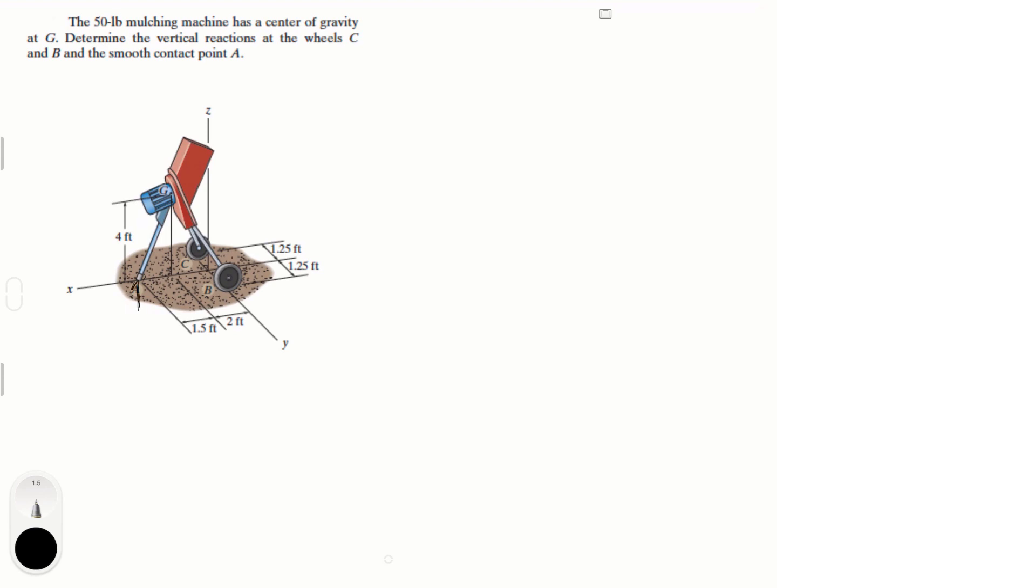First let's start our free body diagram. We know we have a reaction at A, a reaction at C, a reaction at B, and we have a weight at G.